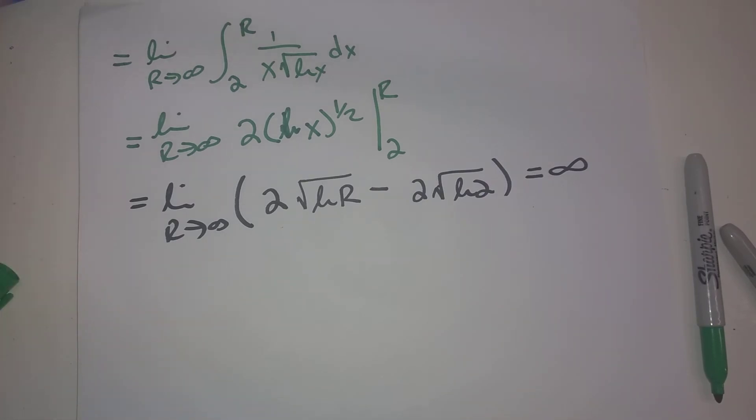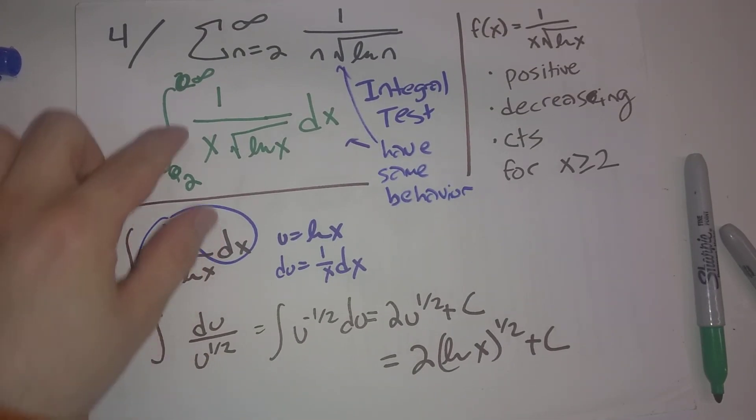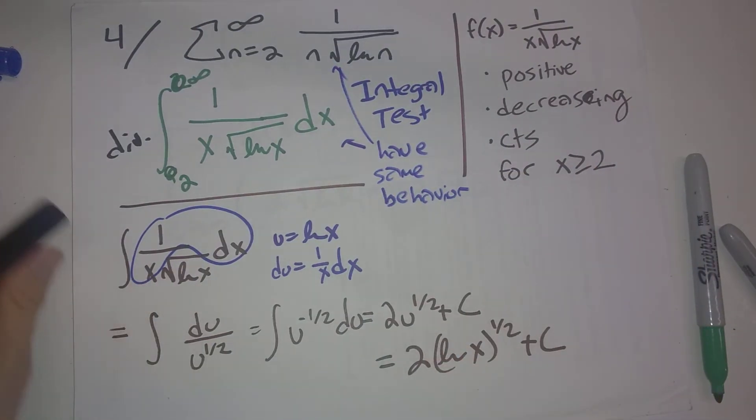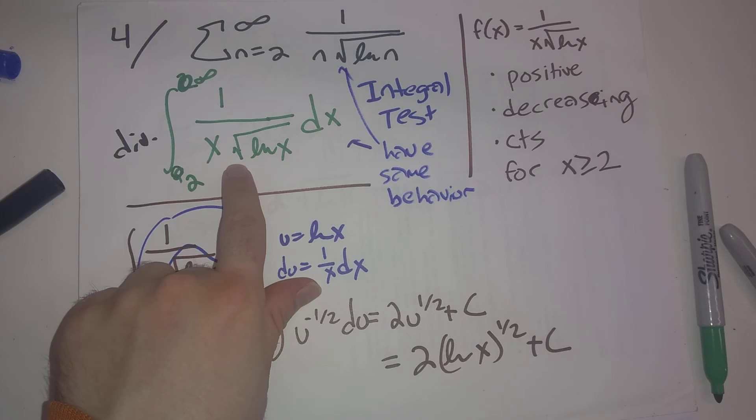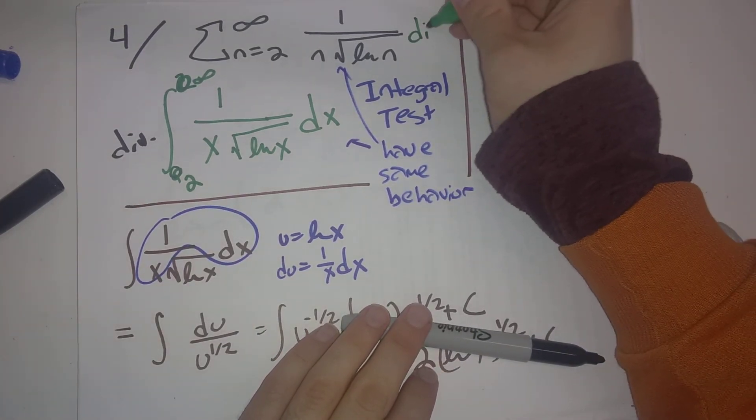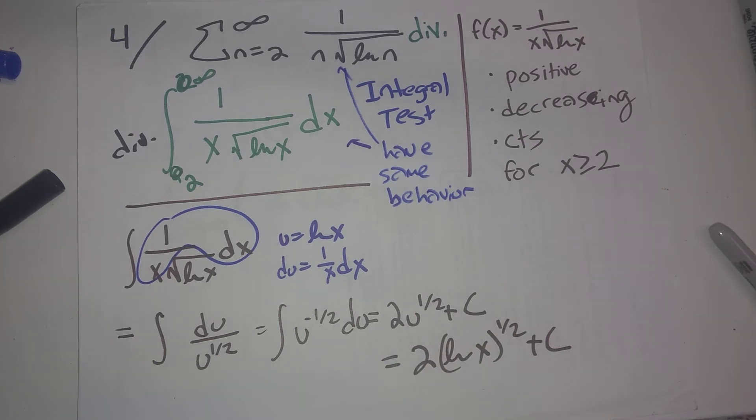So we conclude, going back here, we conclude that this diverges. So by the integral test, because the corresponding improper integral diverges, we conclude that the original series diverges as well.